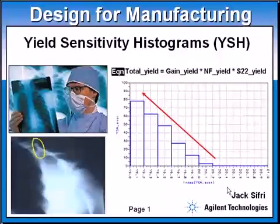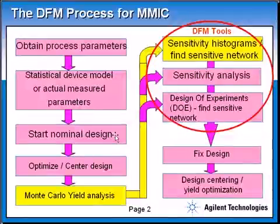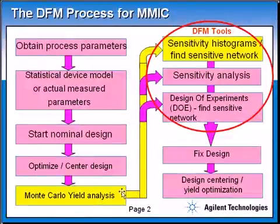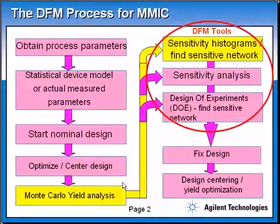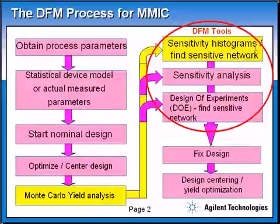So let's see how this works. This is the DFM process for MIMIC, where you start your design, statistical design, start your nominal design, optimize and center your design, and then you get to this step in yellow called Monte Carlo yield analysis. Monte Carlo yield analysis tells you there is a problem in the design and your yield is low. But then how do you fix it? How do you know where the problem is coming from? This is exactly the purpose of this presentation — discussing the yield sensitivity histograms, which will help you pinpoint and find out where the problem is coming from.